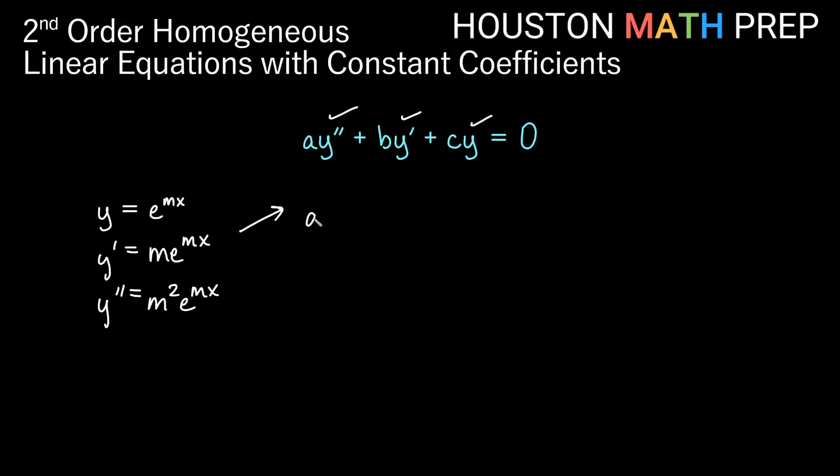So this equation would then look like a times m squared e to the mx, if we put in y double prime, plus by prime would be plus bm e to the mx, plus cy, which would be ce to the mx, is equal to zero. And notice that they all have this exponential in common. Let's go ahead and factor that out. So we'll say e to the mx times the quantity am squared plus bm plus c, that quantity equal to zero.